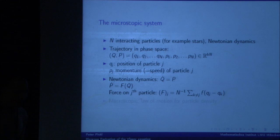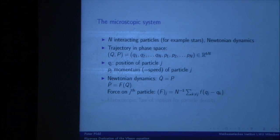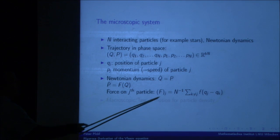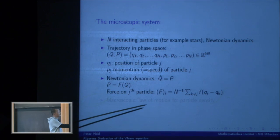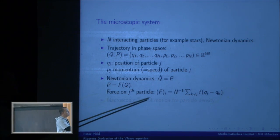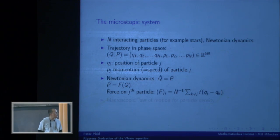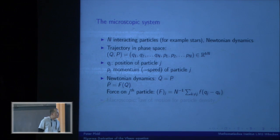I assume the force on the j-th particle is given by a pair interaction: f of (q_j minus q_k), summed over all other particles k, with a coupling constant of N^{-1}, where N is the particle number.